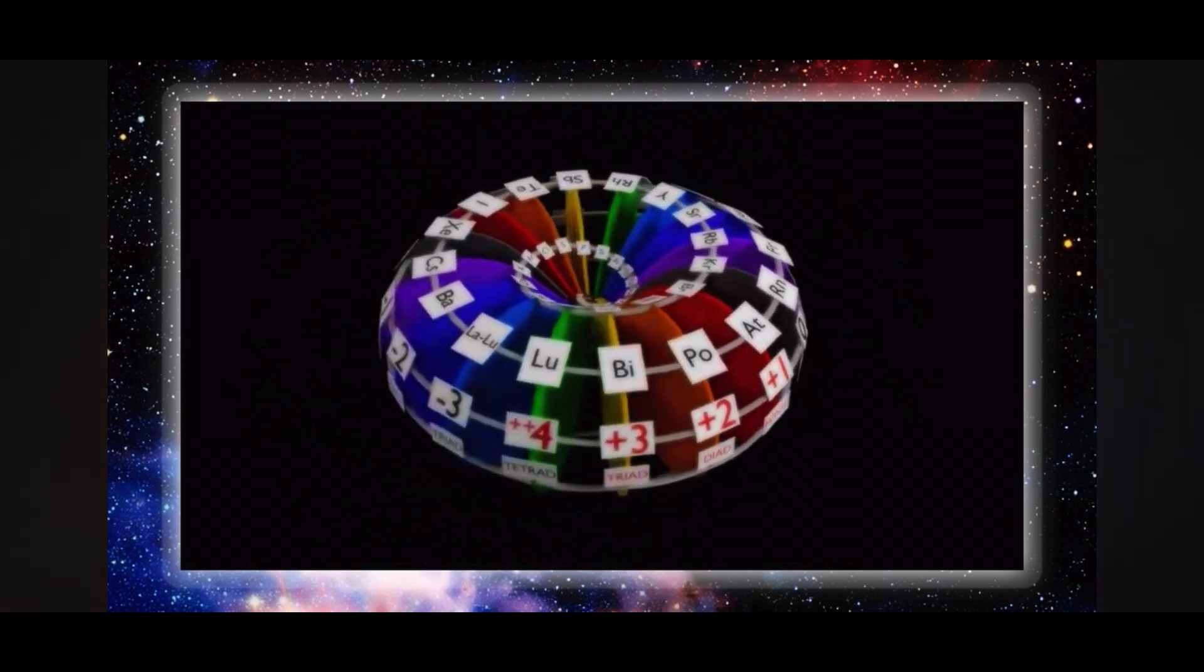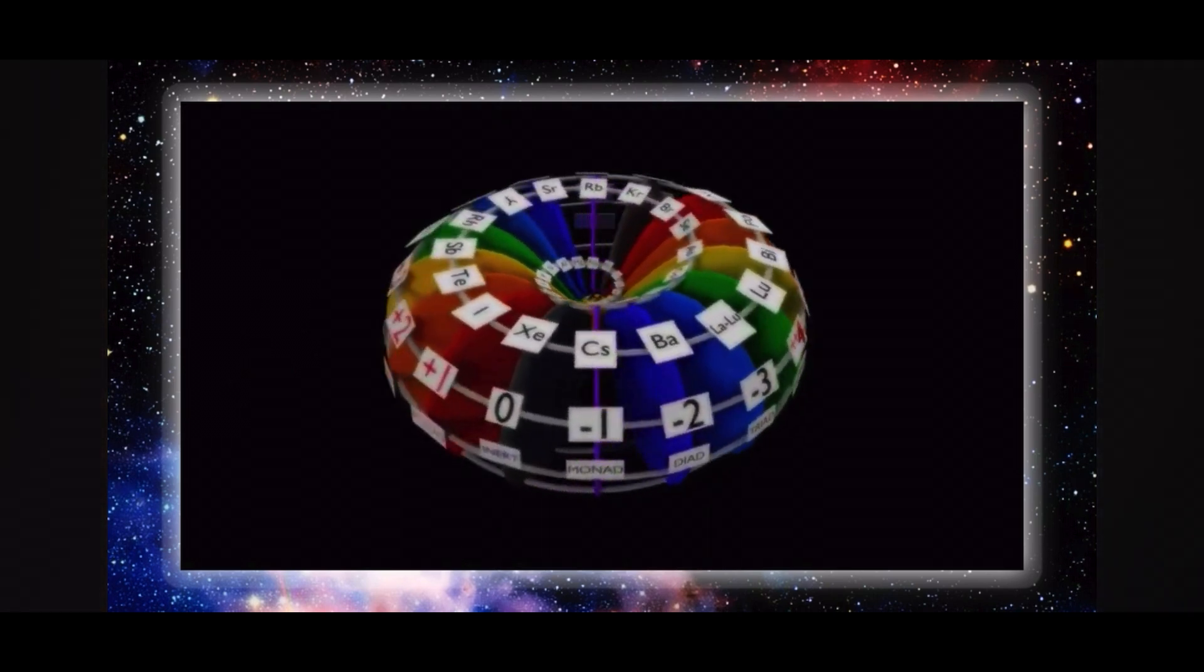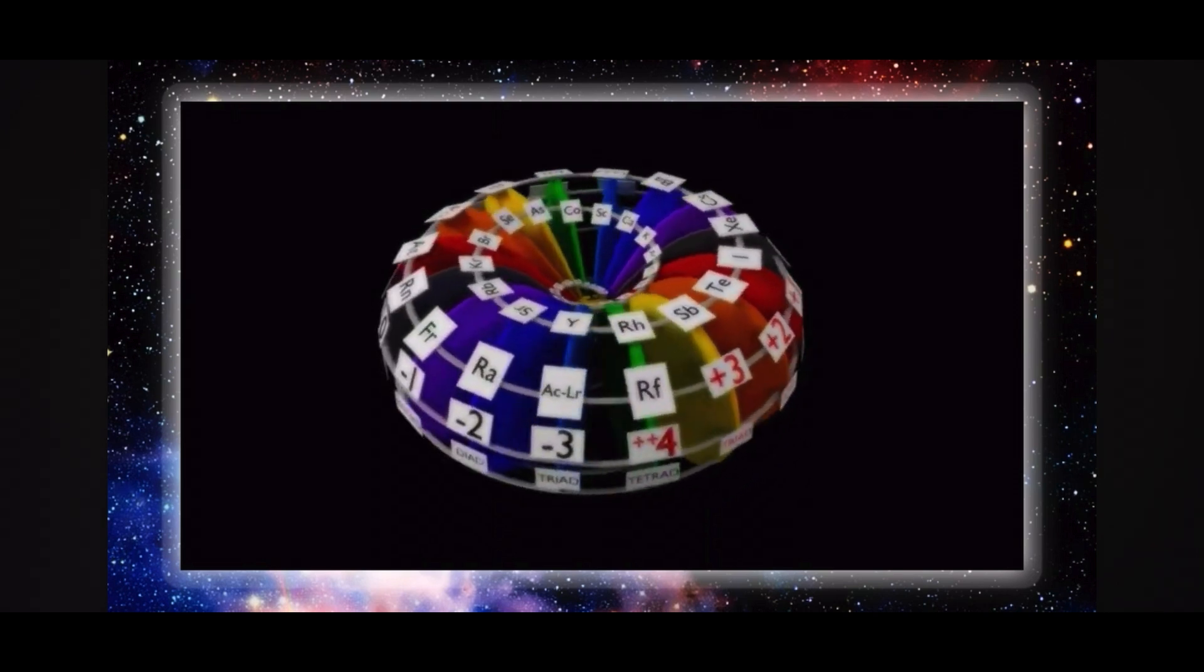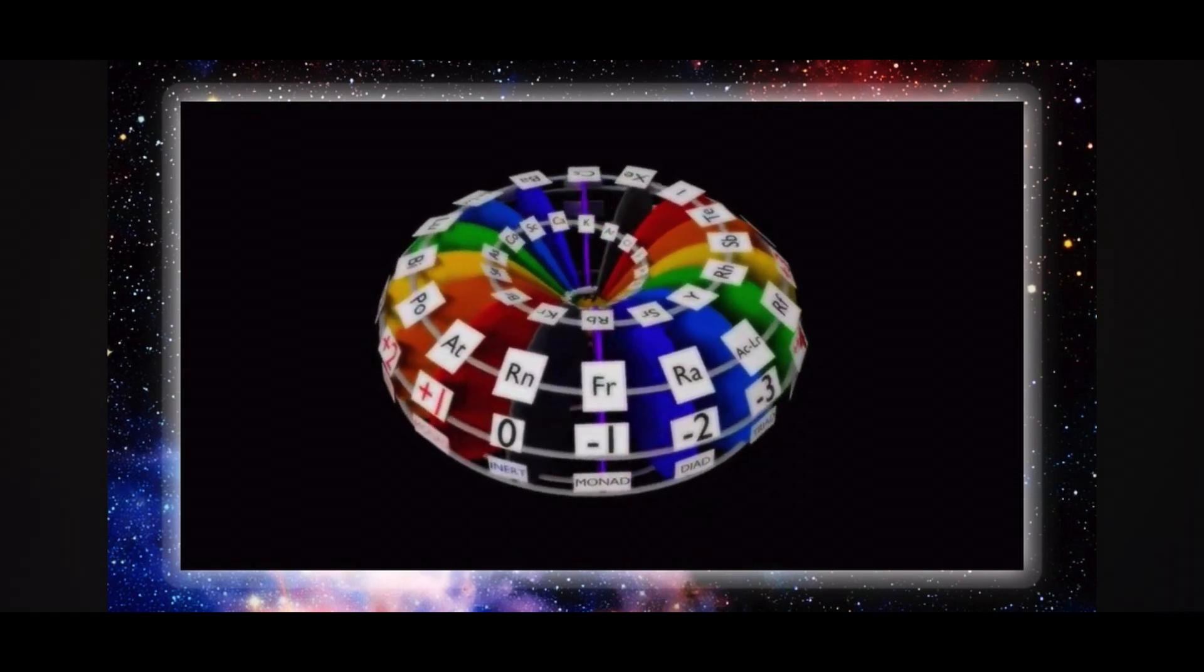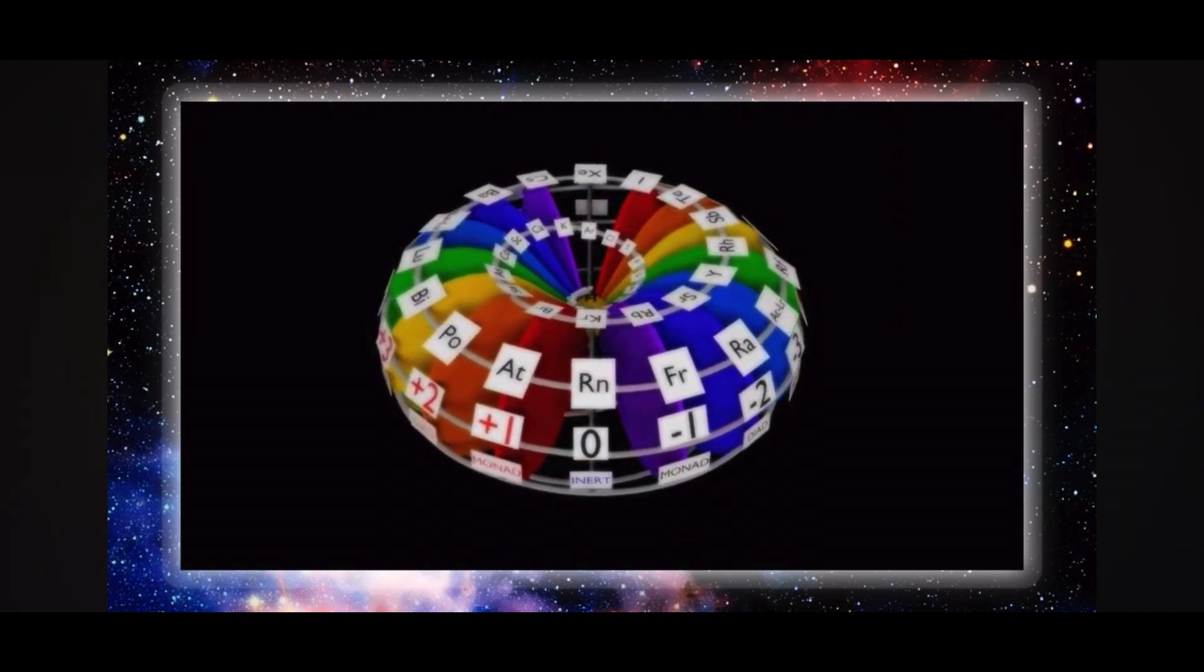When all the elemental nodes are plotted according to their valences, the elements correctly align to their base frequencies. These base frequencies, which are also defined by sound and color, are indicated for each of the eight planes of the model.